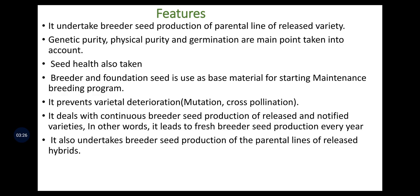Maintenance breeding is an area of plant breeding which deals with principles and methods of breeder seed production, as well as the production of nucleus seed. Its features include: it undertakes breeder seed production of parental lines of released varieties; genetic purity, physical purity, germination, and seed health are taken into account; and breeder and foundation seed is used as base material. It prevents varietal deterioration by mutations and cross-pollination, leads to fresh breeder seed production every year, and also undertakes breeder seed production of parental lines of released hybrids.